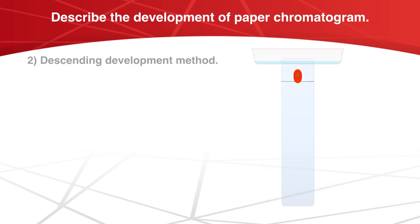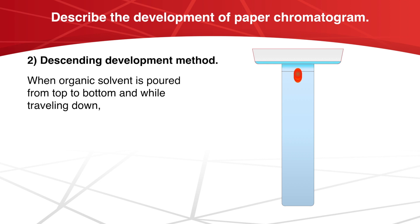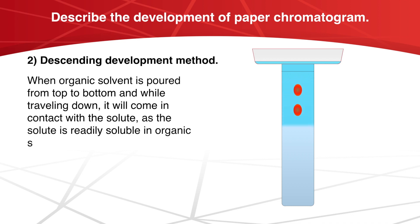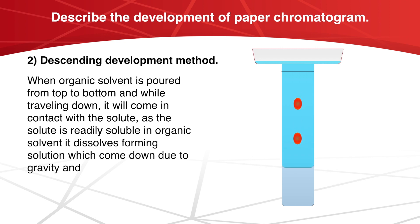In the descending development method, organic solvent is poured from the top to bottom, and while traveling down it comes in contact with the solute. As the solute is readily soluble in the organic solvent, it dissolves, forming a solution which comes down due to gravity and is collected in the pot.